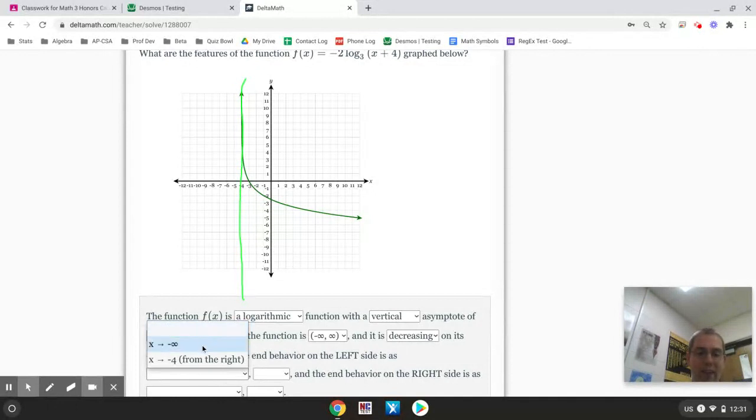So, the end behavior as negative, you have two choices here. One says on the left side, does it approach negative infinity or does it approach negative 4? Well, the truth is, it never makes it to negative infinity because if I trace along, it gets stuck at that vertical asymptote at negative 4.